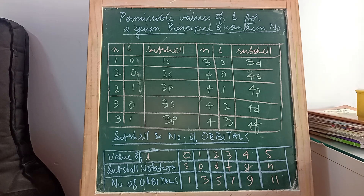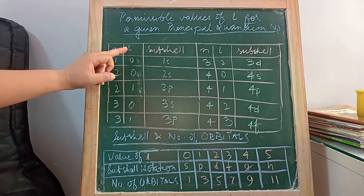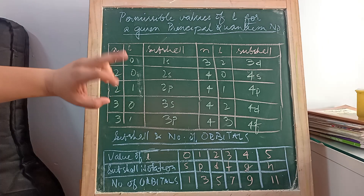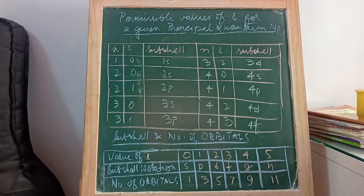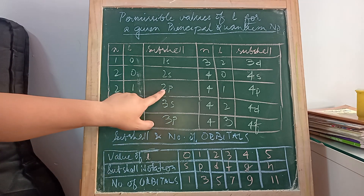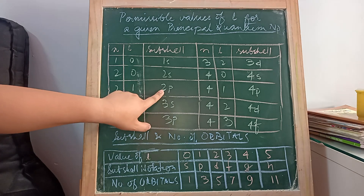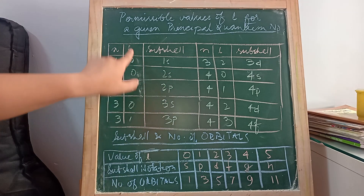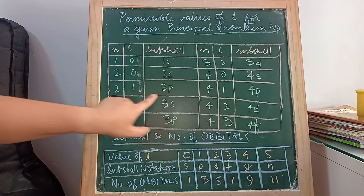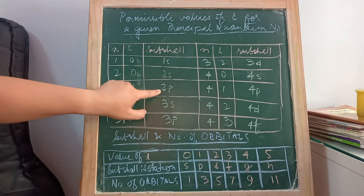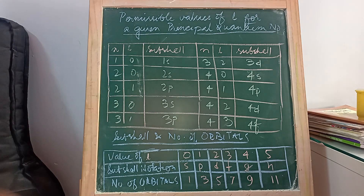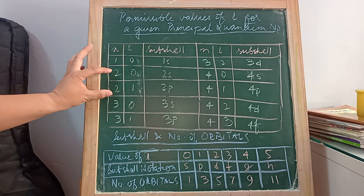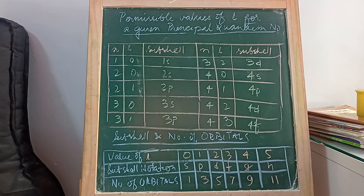Since L can be 0 and 1, that means there are 2 subshells. And what are those 2 subshells? Those are 2s and 2p. The number 2 indicates the principal quantum number, the principal shell. L equal to 0 means s, and L equal to 1 means p. So 2s and 2p are the notations for the subshells when the principal quantum number is 2, for the second shell.